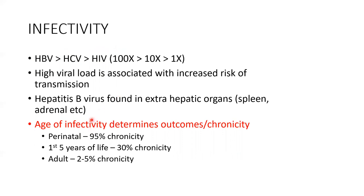The age of infectivity determines the outcomes. This is one of the most important points to understand, as treatment is also aimed at this level. If it is a perinatal transmission, the risk of chronicity is 95%. If acquired within the first five years of life, it is about 30%. In adulthood, it is only about two to five percent chronicity.